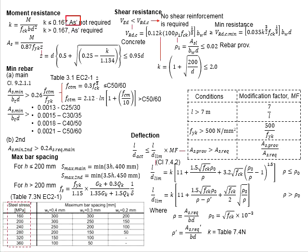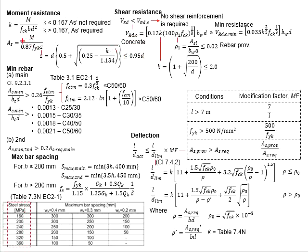If K is less than 0.167, that means compression reinforcement is not required. When compression reinforcement is not required, the calculation steps become relatively easy — you just need to determine the lever arm to be less than 0.95d and determine the amount of reinforcement bar. However, if the provided thickness is relatively small, there is still a chance of K being more than 0.167, where you will require compression reinforcement. The relevant equations may be found in the chapters on beam design. Normally, we try to avoid compression reinforcement by slightly increasing the effective depth of the staircase for a more economical design.